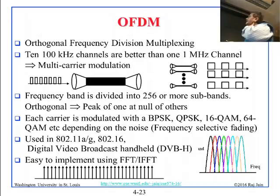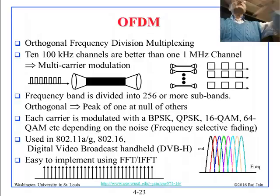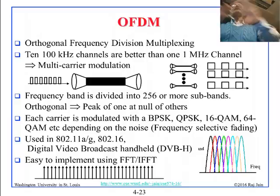Each carrier can now be independently modulated — BPSK, QPSK, 16-QAM, whatever you want — and differently. So each channel could run at its own speed. Somebody with a lot of interference runs slowly; somebody in great conditions can run fast. Now you have thousands of subcarriers all running at their own optimal speed.